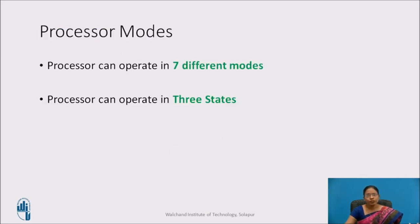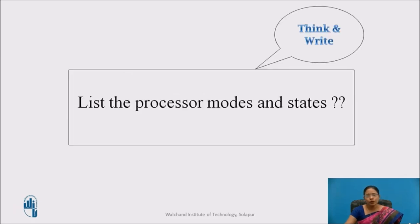Which are the processor modes? The processor can operate in 7 different modes and 3 different states. As I already said in the registers video, I talked about the different modes and states. So at this point, I want to ask you a question: can you please list the processor modes and states? You can think on this question, write the answer, and take some time — about 5 minutes. You can pause the video and write the answer.